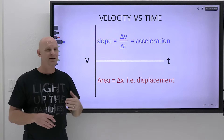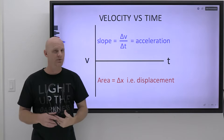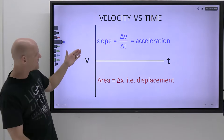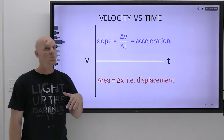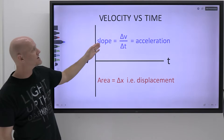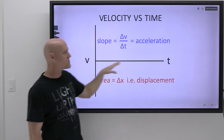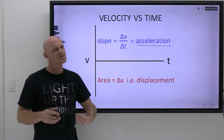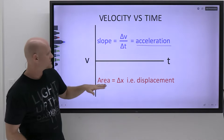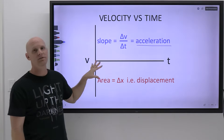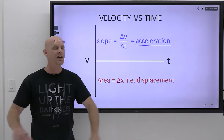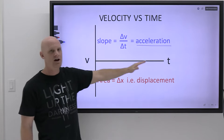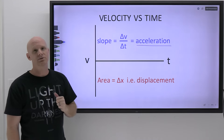Now we move to velocity versus time. On position versus time, the slope gave us velocity. But now, with velocity on the y-axis, the y-axis itself gives us the velocity — not the slope. The slope on a velocity versus time graph gives us the acceleration: change in velocity over change in time, which by definition is acceleration. Also importantly, the area under the curve equals displacement — something that wasn't true on the position versus time graph.